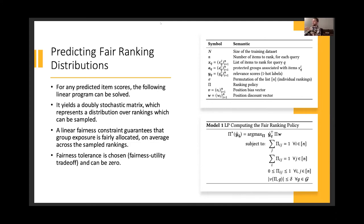So this matrix is going to represent a distribution over rankings. So given a set of item embeddings, you predict item scores. You solve this linear program to get a distribution over rankings which can then be sampled for ranking results.